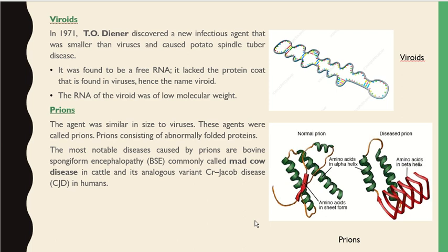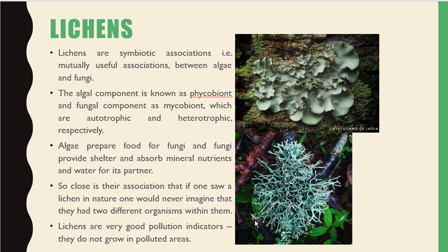Lichens are a symbiotic, mutually beneficial association between two groups of organisms: algae and fungi. The algal component is known as phycobiont and the fungal component as mycobiont, which are autotrophic and heterotrophic respectively. Algae prepare food for fungi, and fungi provide shelter and absorb mineral nutrients and water for their partners. Their association is so close that one cannot easily identify two different organisms within them.